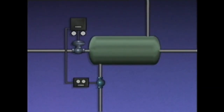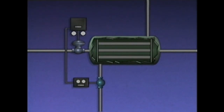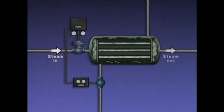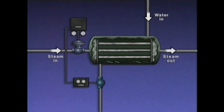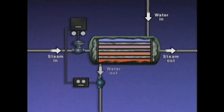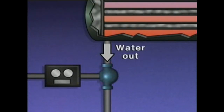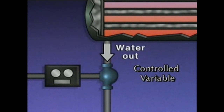To see how an automatic feedback control system works, we'll use this illustration of a heat exchange process. In this system, steam is used to heat water. Steam enters through a valve, flows through tubes inside the heater, and exits through a pipe on the other side. The steam transfers heat to the water, which enters the heater at the top, flows around the tubes, and exits at the bottom. The temperature of the water at the outlet of the heater is the controlled variable, and also the measured variable, because the control system uses it as a basis for making operating changes.